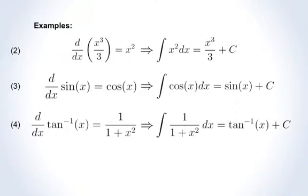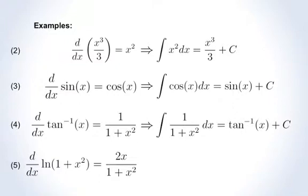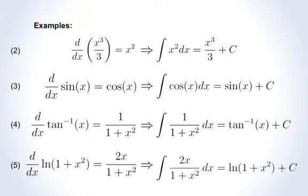The derivative of the natural log of 1 plus x squared is 2x over 1 plus x squared. This follows from the fact that the derivative of the natural log of u is 1 over u, and an application of the chain rule. Turning this around, we get that the integral of 2x over 1 plus x squared is the natural log of 1 plus x squared plus a constant c.